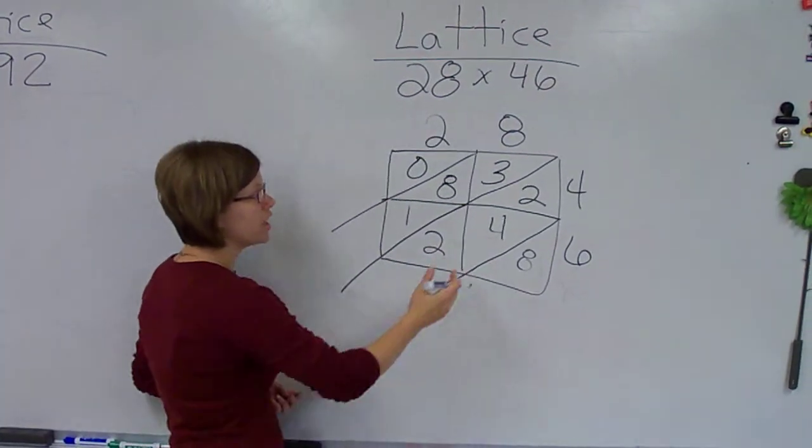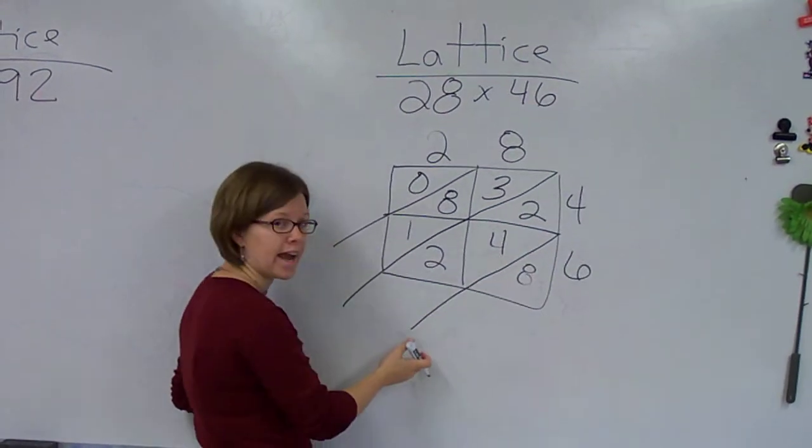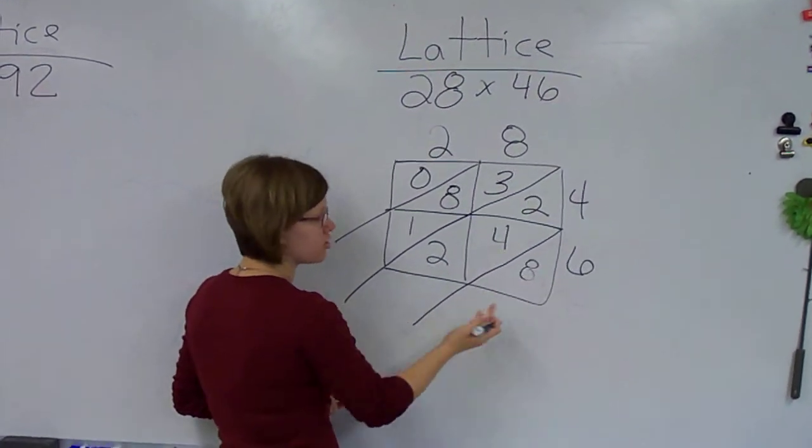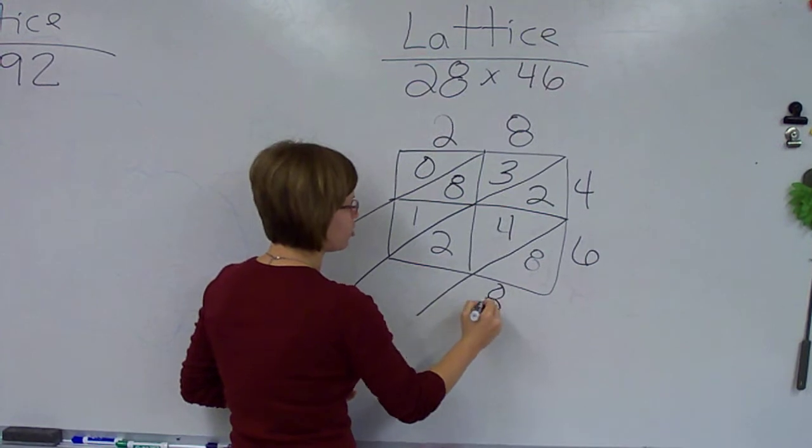Because what I need to do in order to get my answer is pull all of this down, and you're going to go in a diagonal direction. So, 8, there's nothing else there. You just bring it down. It's just 8.